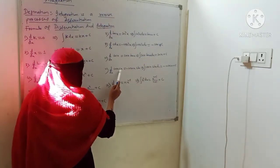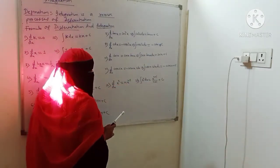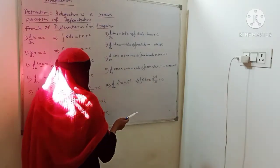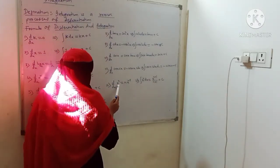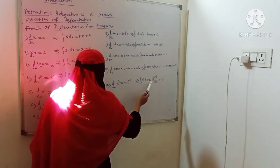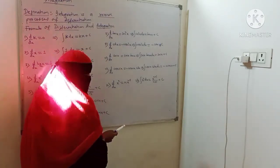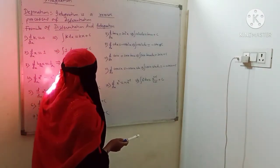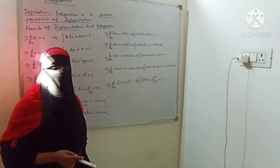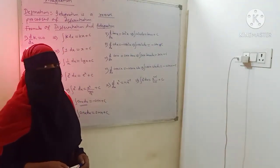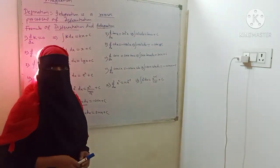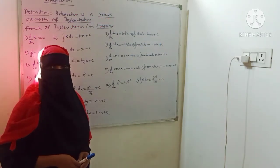d/dx of cosec x is minus cosec x times cot x. Integration of cosec x cot x dx is minus cosec x plus C. d/dx of x to the n is n times x to the n minus 1, and integration of x to the n is x to the n plus 1 upon n plus 1, plus C. So these are the formulas of the derivative and integration that we have to remember. Thank you so much for watching my video.